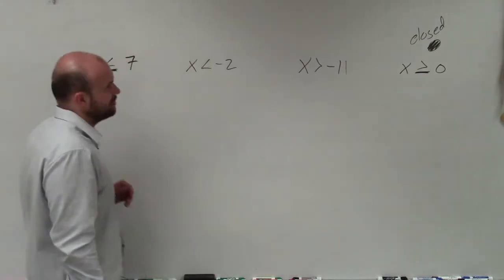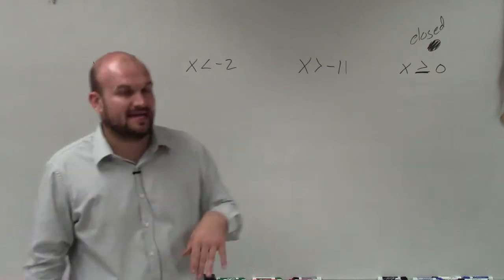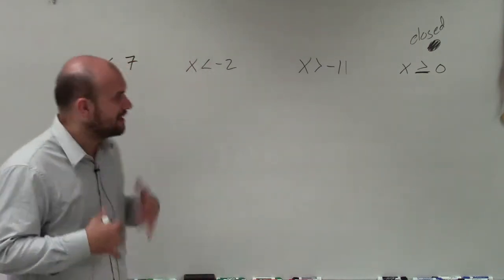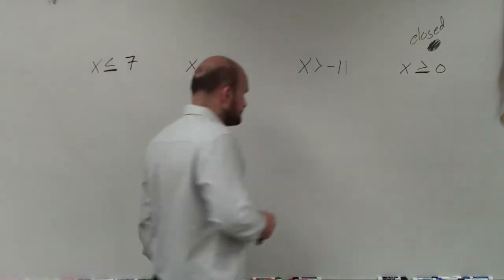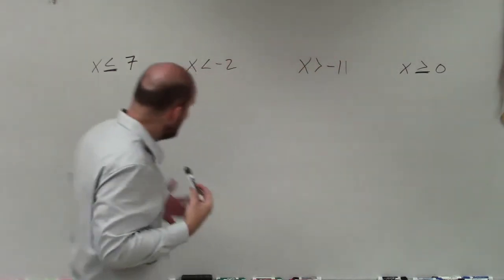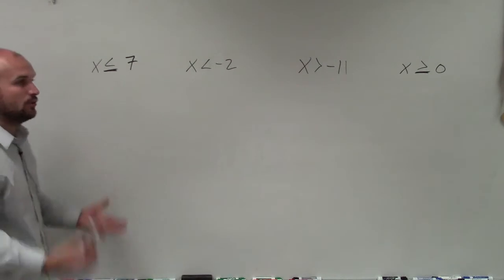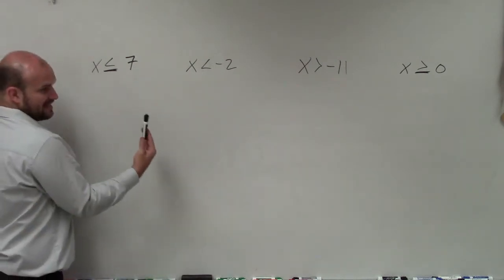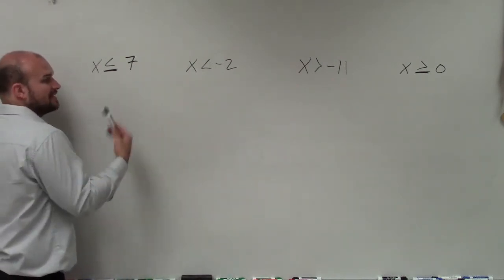When we're solving one variable inequalities, we are going to use a line graph to identify our solution. There's a couple things that's important for us to understand with the inequality symbols. First of all, we need to understand what exactly the inequality symbol says. So I'm going to say these out loud, and then describe the parts of them.